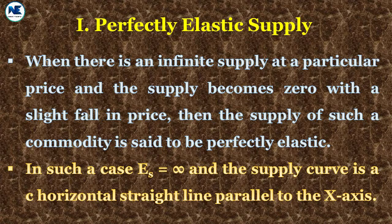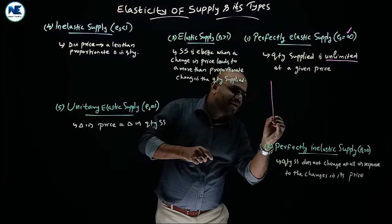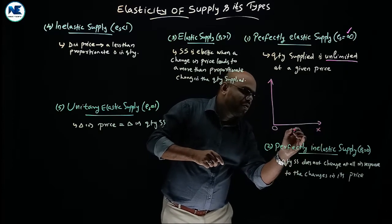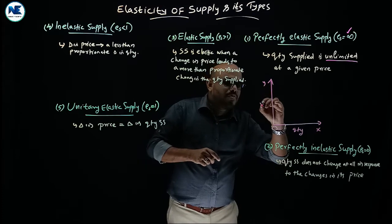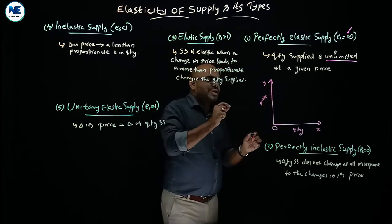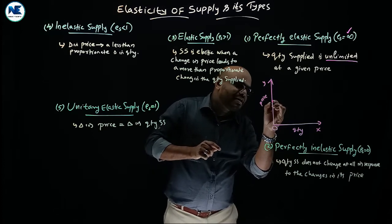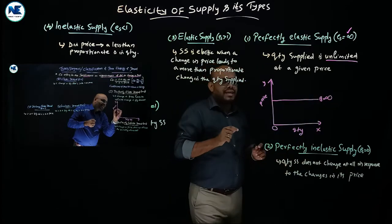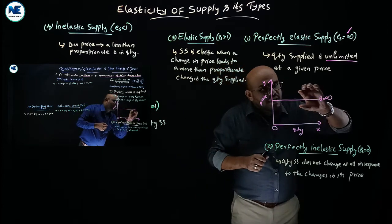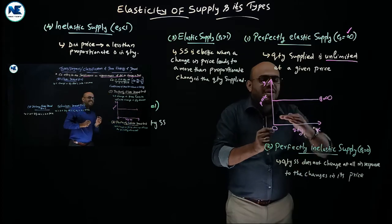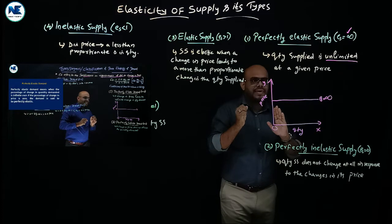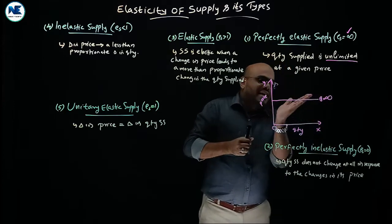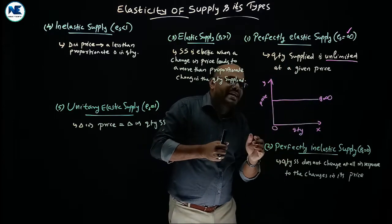What is the shape of the perfectly elastic supply curve? On the graph, the X-axis represents quantity and the Y-axis represents price. The perfectly elastic supply curve is a horizontal straight line, where elasticity of supply equals infinity. It is parallel to the OX axis, or the output axis.